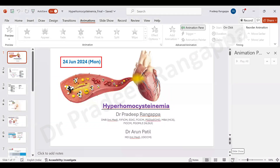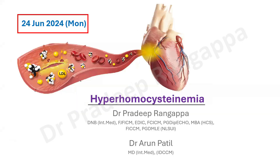Hello friends. I'll be talking on this topic very briefly: hyperhomocysteinemia. Most intensivists would be dealing with stroke in young patients or young patients having myocardial infarction coming to ICU. Very often we work them up for a procoagulant state, and one of the findings is homocysteinemia or hyperhomocysteinemia. We need clarity on why this is a dreaded situation, whether there are modifiable factors, and whether it can be treated.